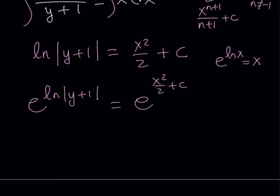So, whatever the argument is, it's going to be that. So, from here, we get the absolute value of y plus 1. We got rid of the ln here. And then we can just set it equal to this function.